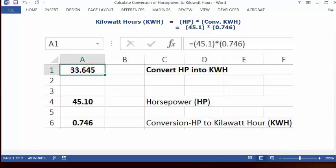You can put your cursor in cell C1 and type 'convert HP into KWH'. Put your cursor in A1 and format it as numbers with three decimal points. You can set it as bold and centered.